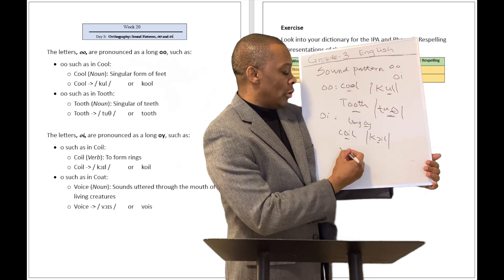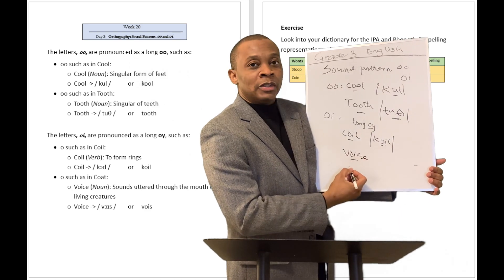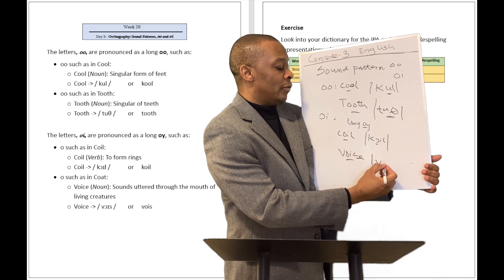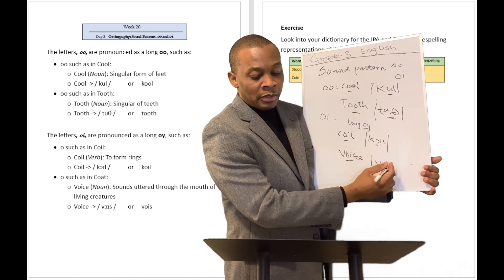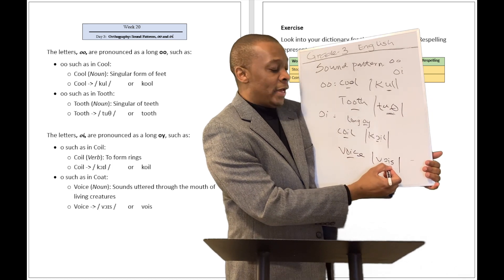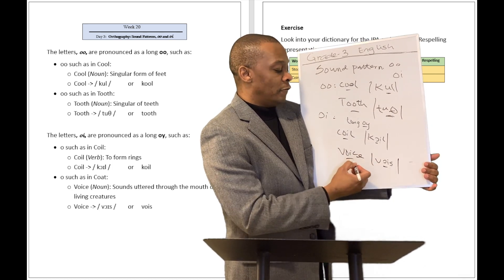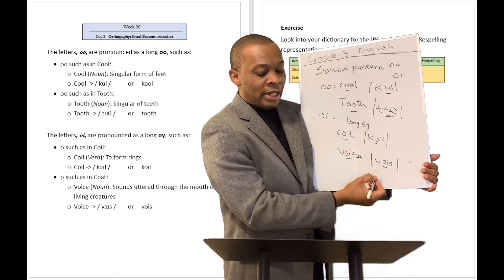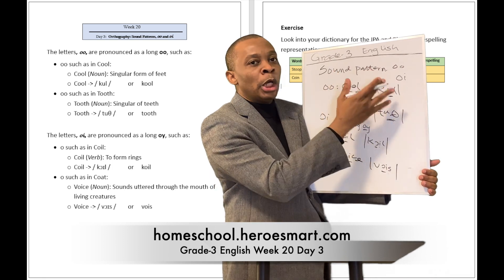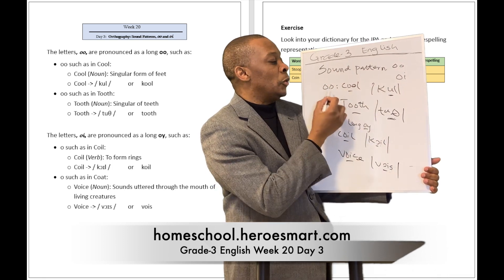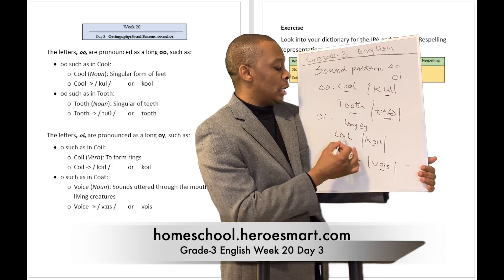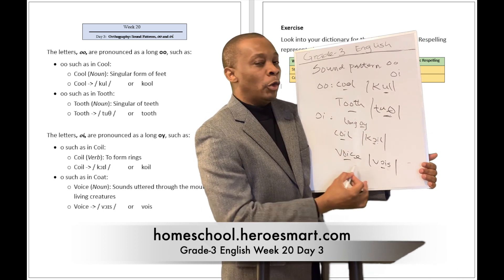What about the word 'voice'? That's going to be another OI sound, and the IPA form of it is going to look like this — 'voice.' So that's an O and an E sound together, so OI — 'voice' — like a long OI sound. So just take note of those sound patterns: OO will sound like OO, and OI will sound like OI, as in 'coil' and 'voice.'